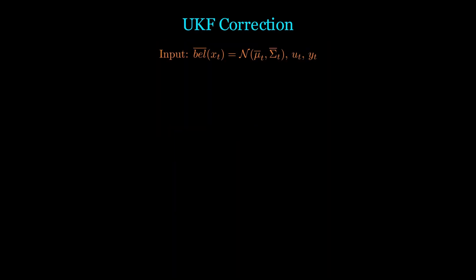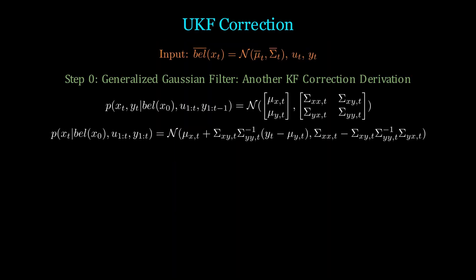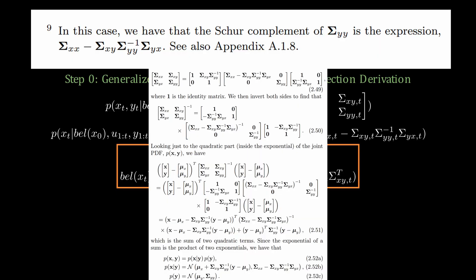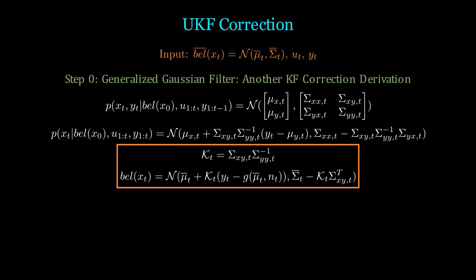The correction step is more involved. First, we need to understand another method that can be used to derive a Gaussian filter. It is called the generalized Gaussian filter and can also lead to the derivations of the Kalman filter and extended Kalman filter. The first line is the joint Gaussian distribution between our state X and measurement Y. The second line is the corresponding conditional distribution. I've left the derivation on the screen and I'll link the textbook in the description, but the proof essentially just uses the Schur complement plus some manipulations.